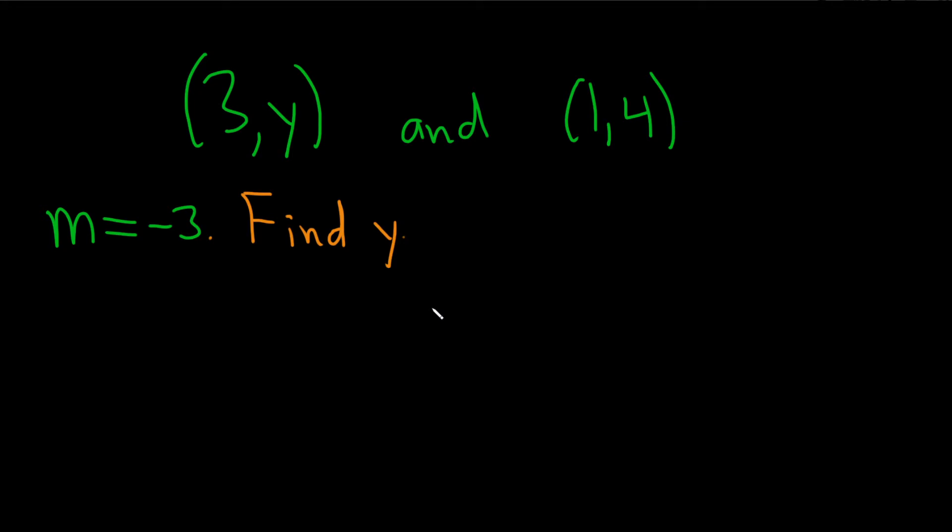So I'm thinking we can start by writing down the formula for the slope. So it's y2 minus y1 over x2 minus x1. That is the formula for the slope. So we basically have to use this to find this missing variable. Let's go ahead and label things.